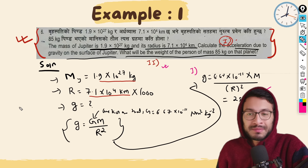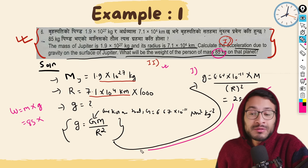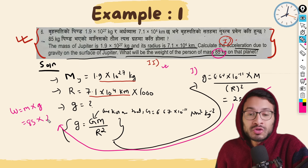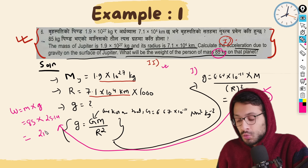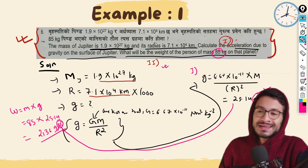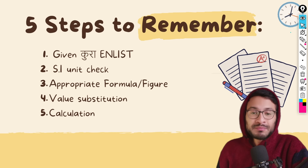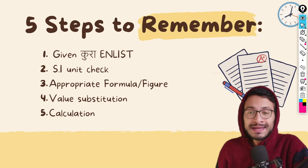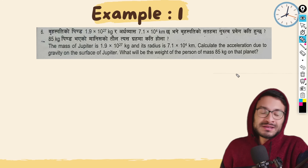Weight is mass into acceleration due to gravity. Mass is 85 kg, and acceleration due to gravity is 25.14, so multiplying gives approximately 2136.9 Newton. Weight is in SI units. This is exactly the practical demonstration of this step — gravity is solved.